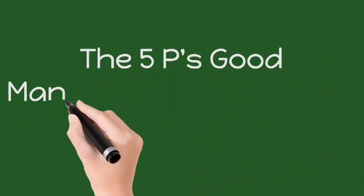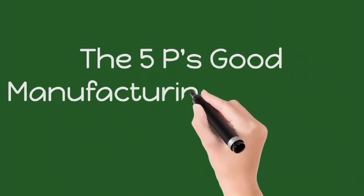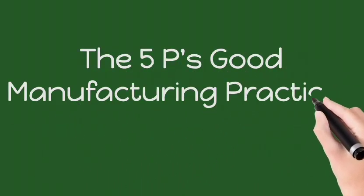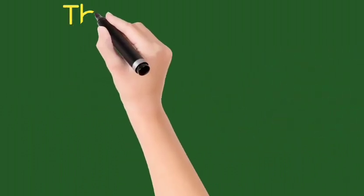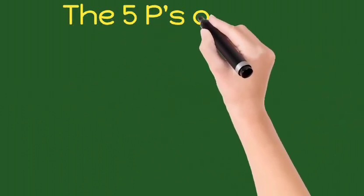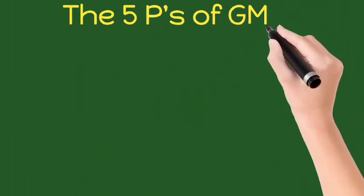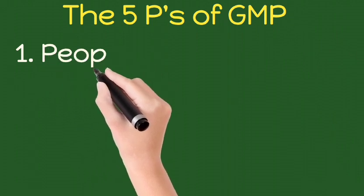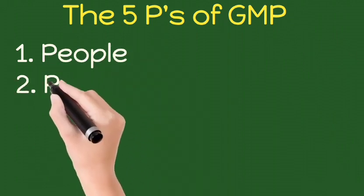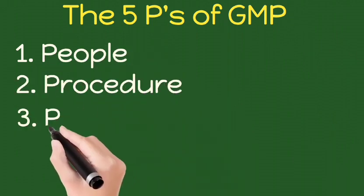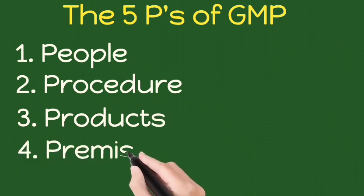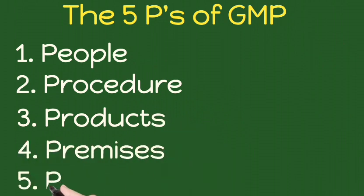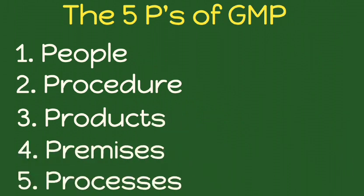Good Manufacturing Practices, GMP. The 5 Ps of GMP are: 1. People, 2. Procedure, 3. Products, 4. Premises, 5. Processes.